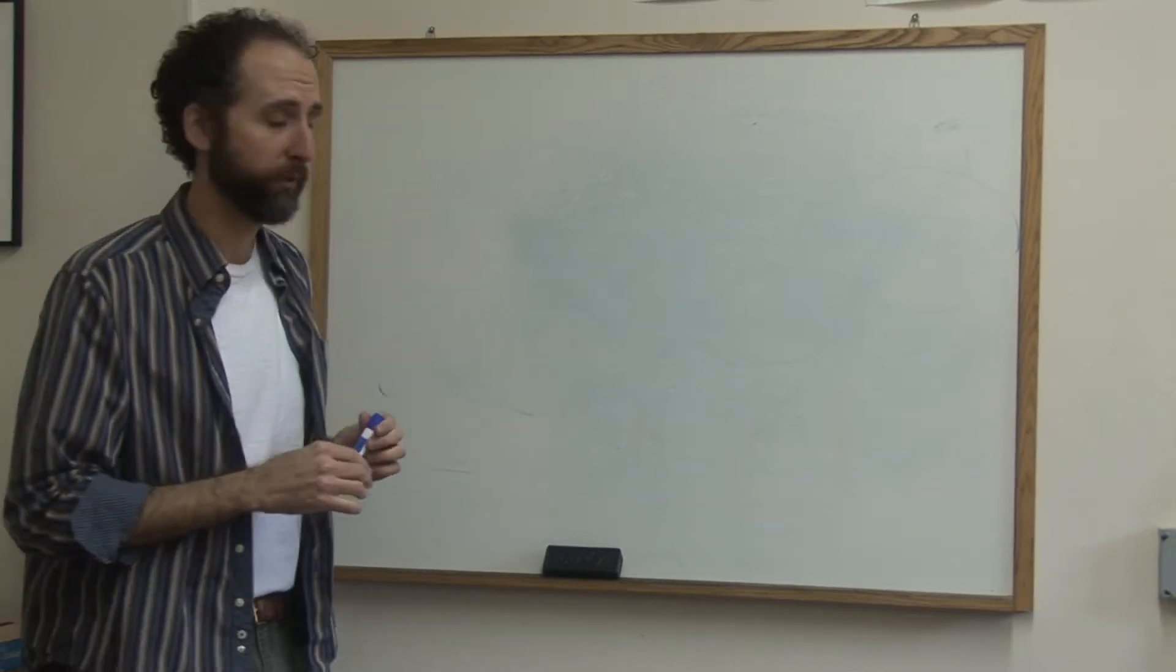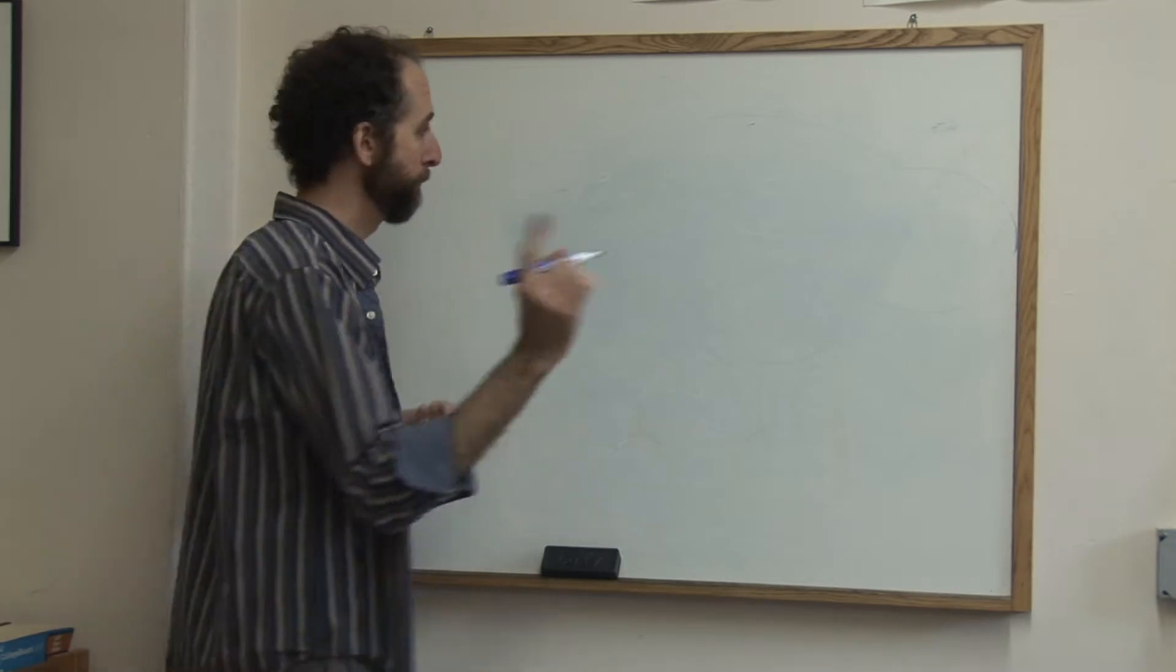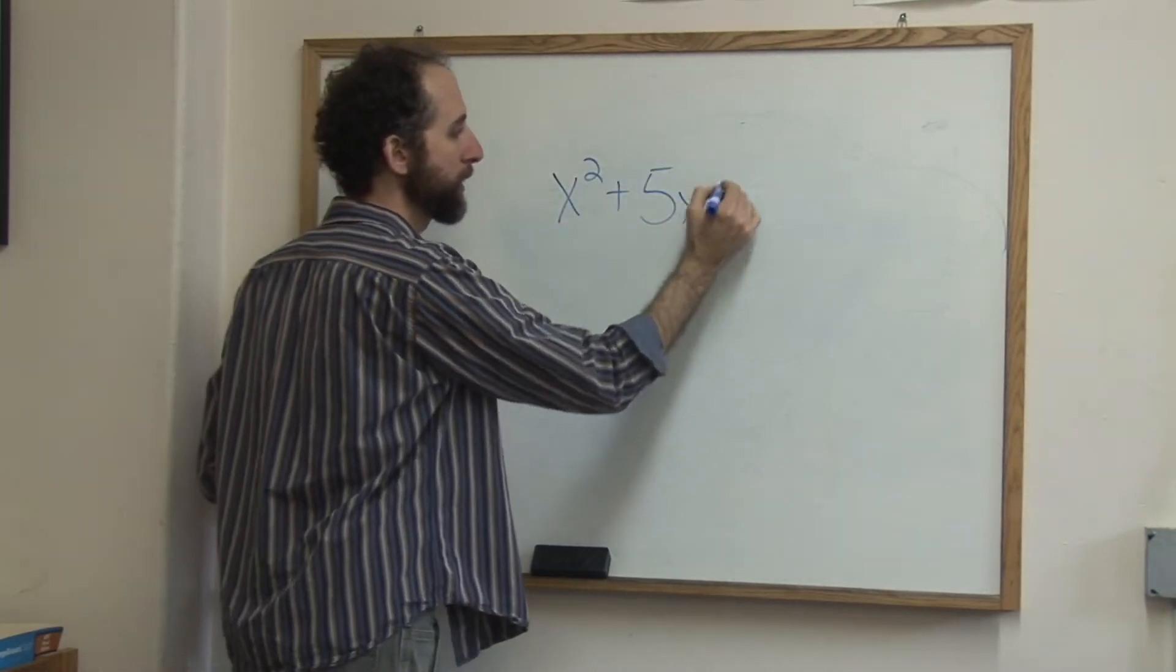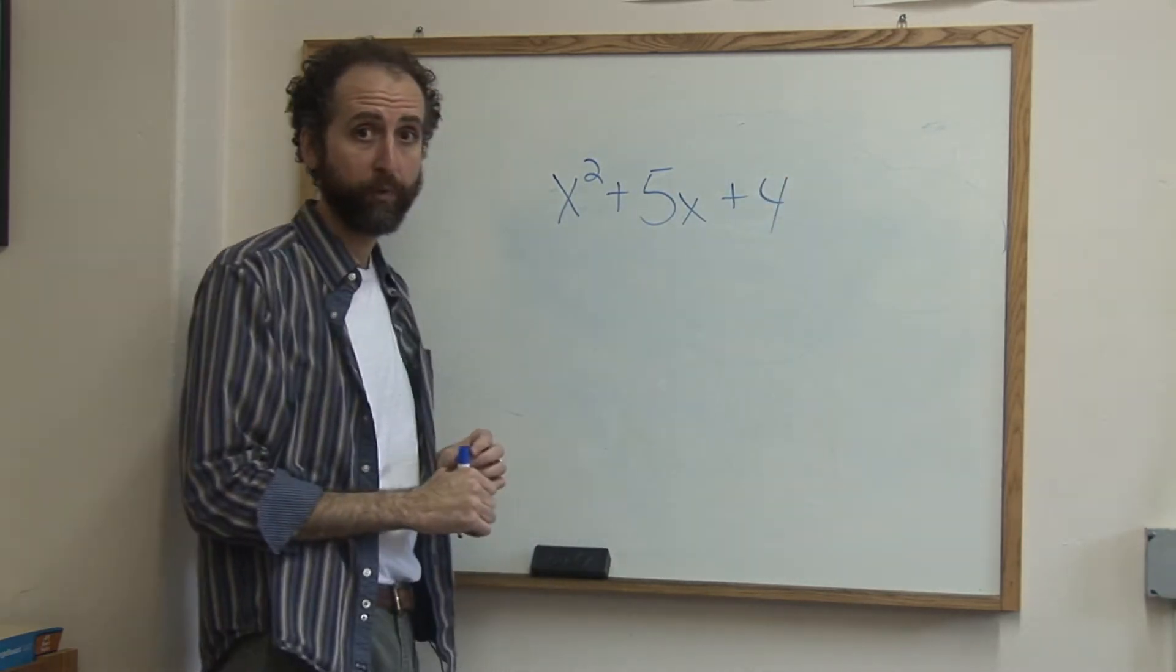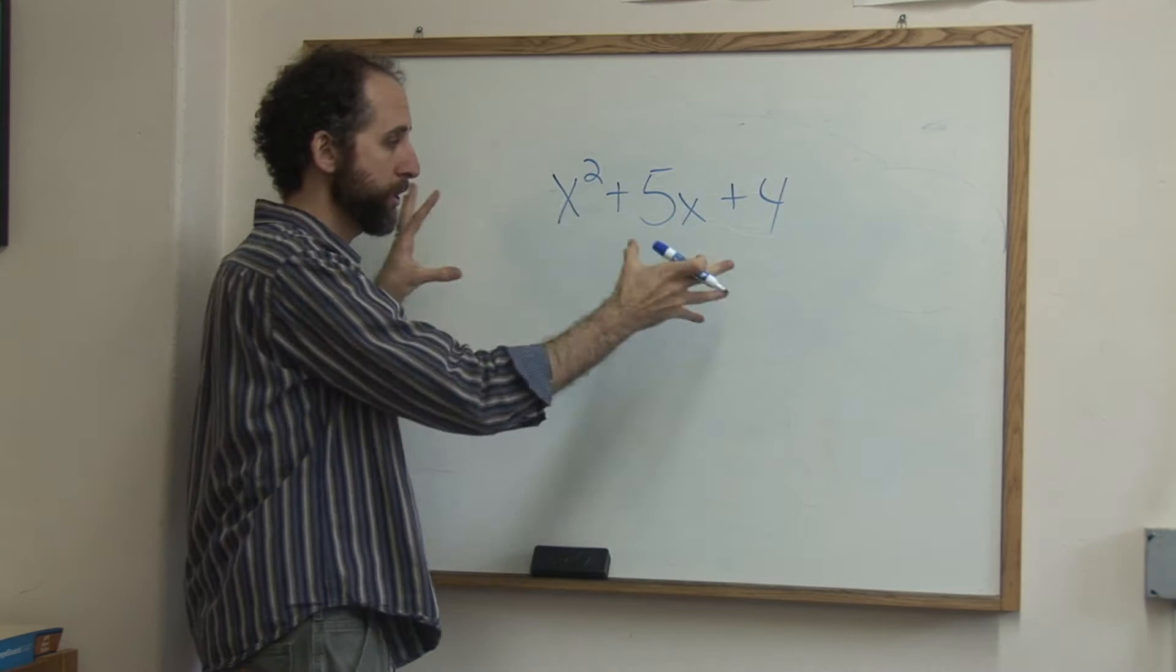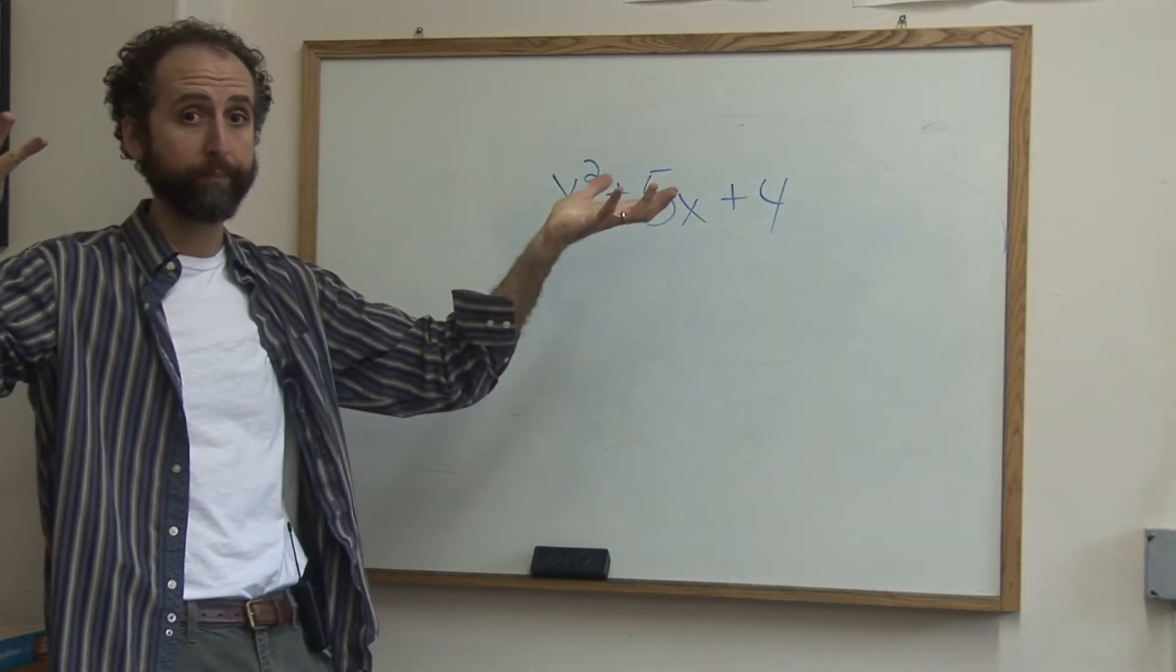Let's take a look at how to factor trinomials. We're going to do a couple different examples so you can see it from different ways. First, let's look at x squared plus 5x plus 4. When you factor a trinomial, factor by the way means break it apart into the two things that multiply to be it. Factoring and multiplying are opposites.